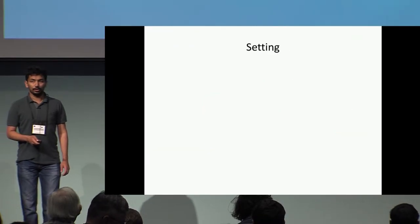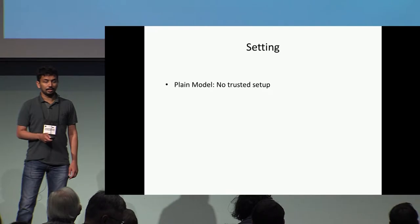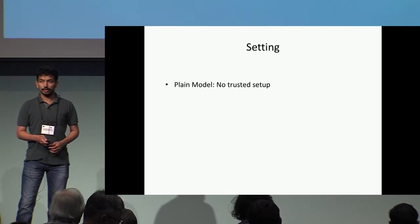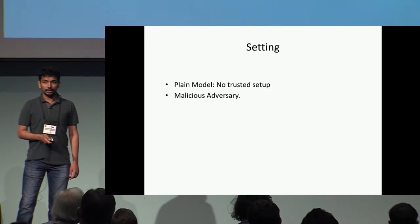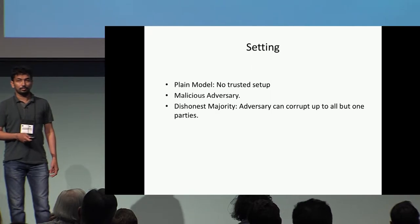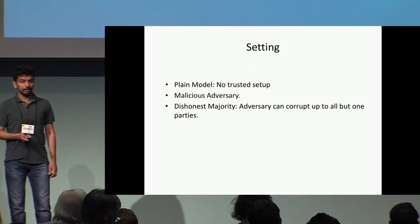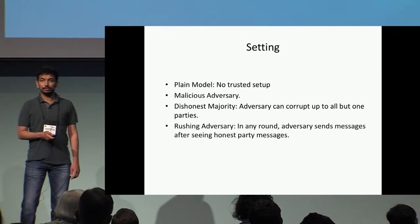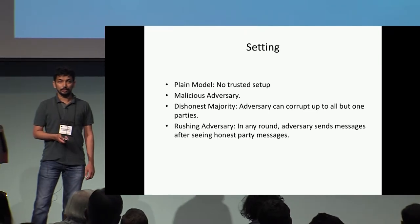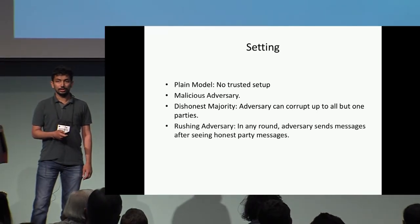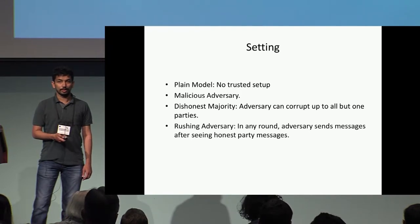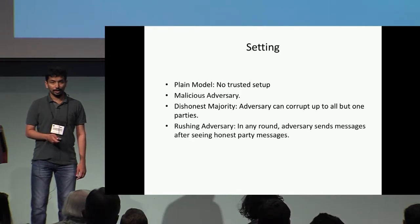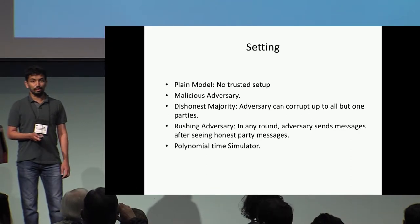In this work, we will work with the following setting. We'll consider the plain model — that is, there is no trusted setup. We'll consider a malicious adversary that can corrupt up to all but one of the parties, i.e., a dishonest majority. Furthermore, we'll allow the adversary to be rushing, which means that it can wait to receive the honest parties' messages in each round before it sends its own messages. And finally, our simulator can only run in polynomial time.